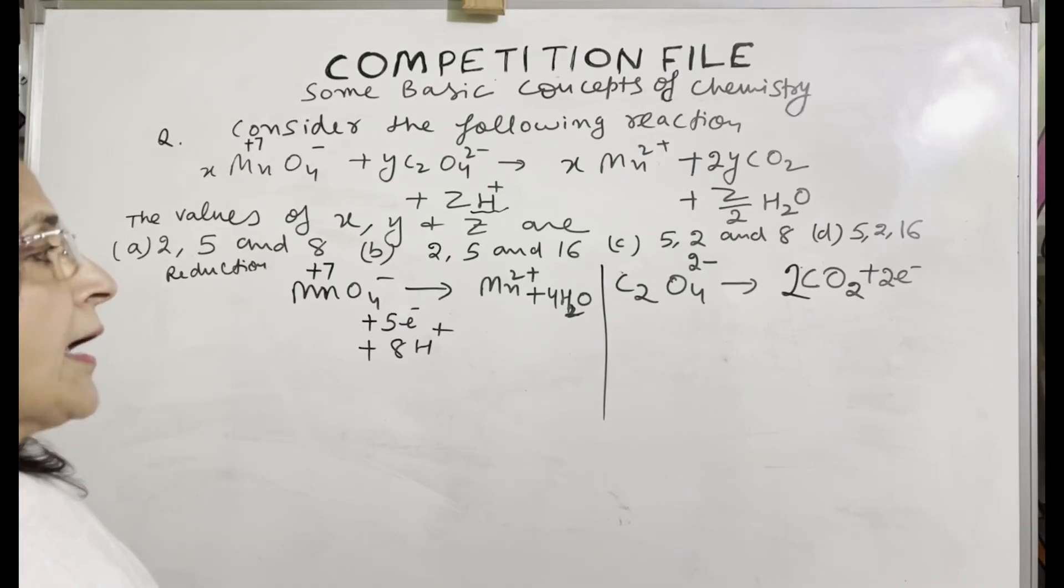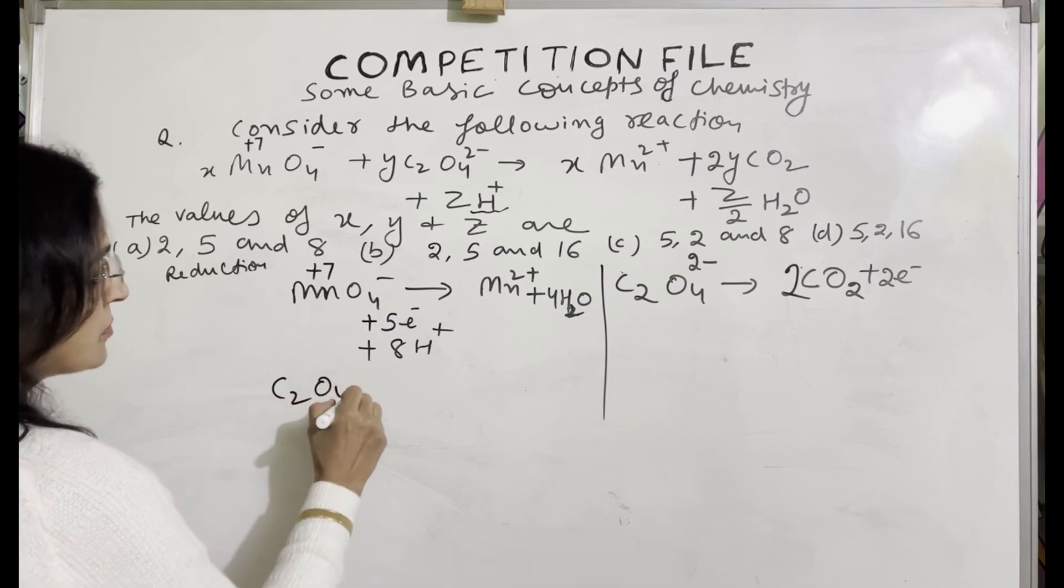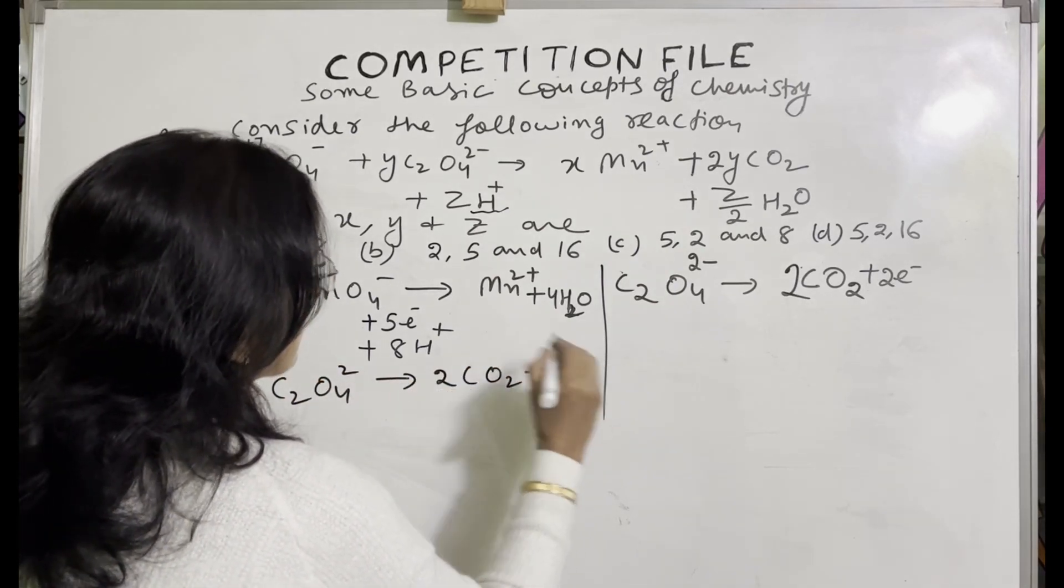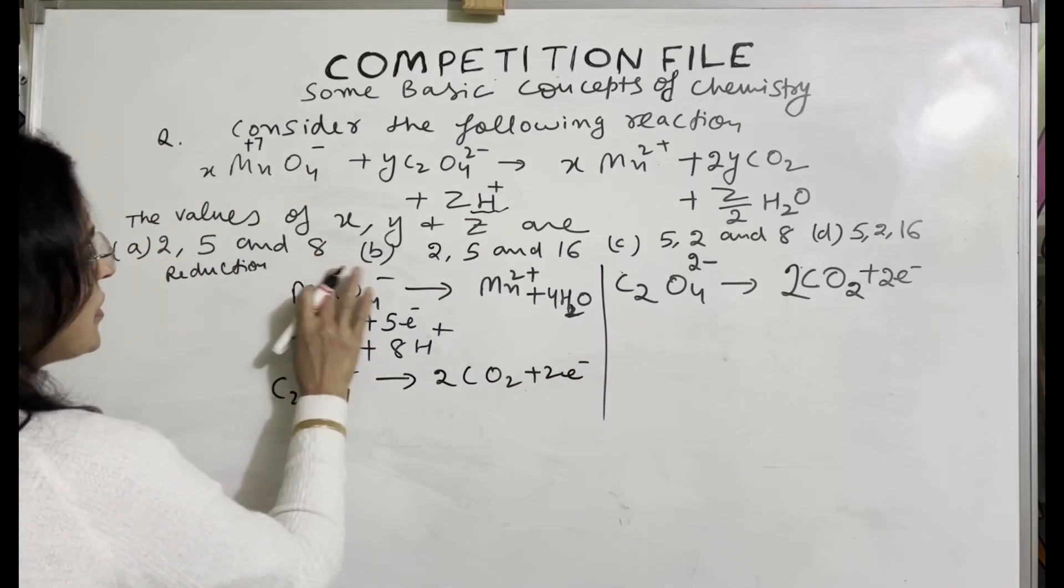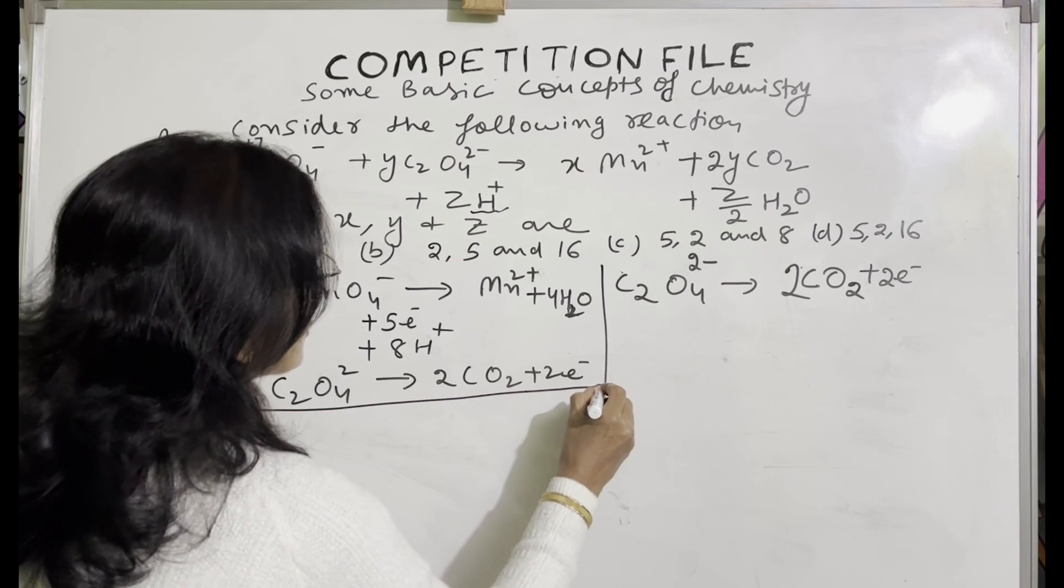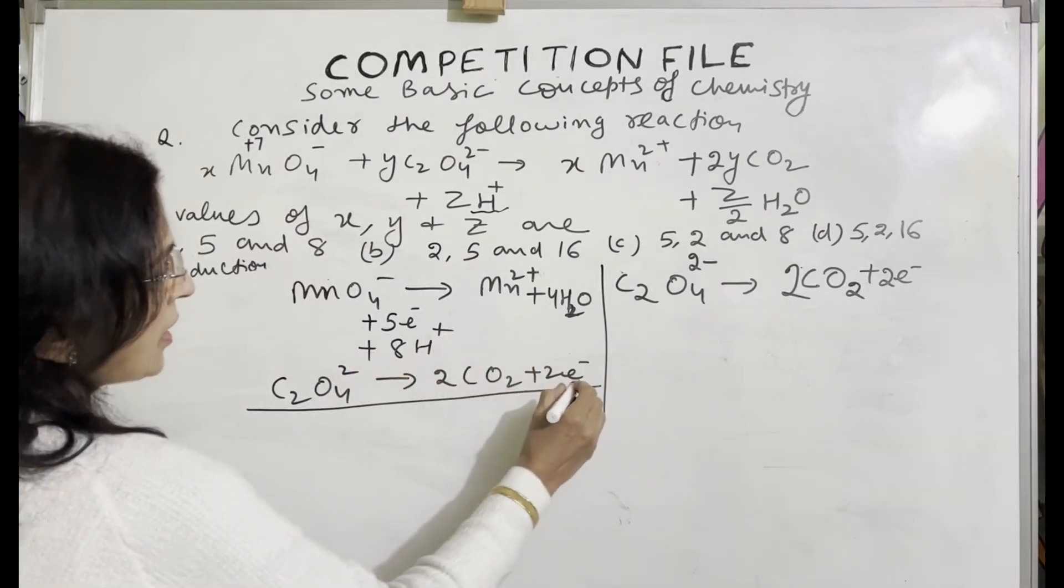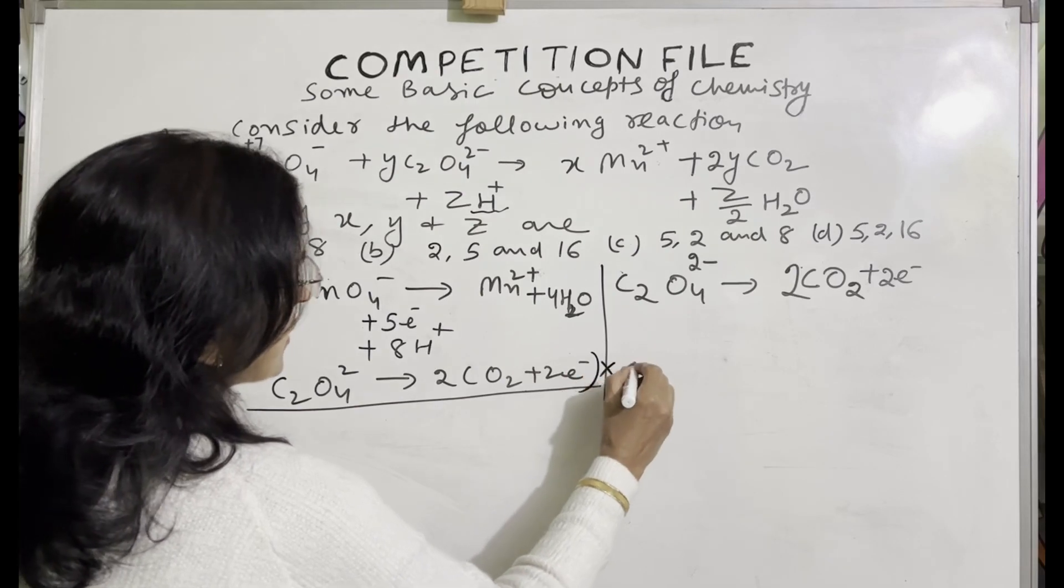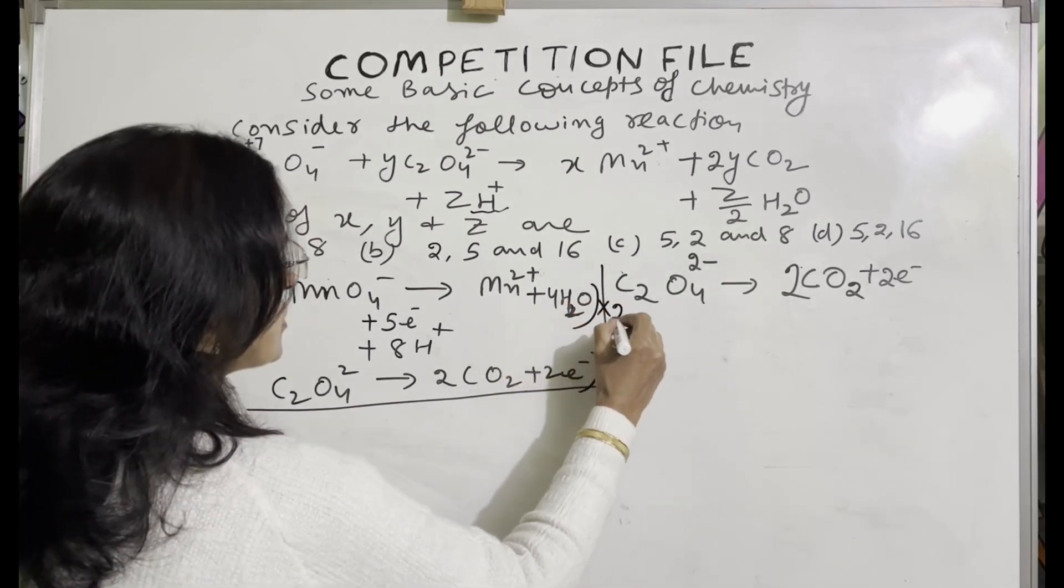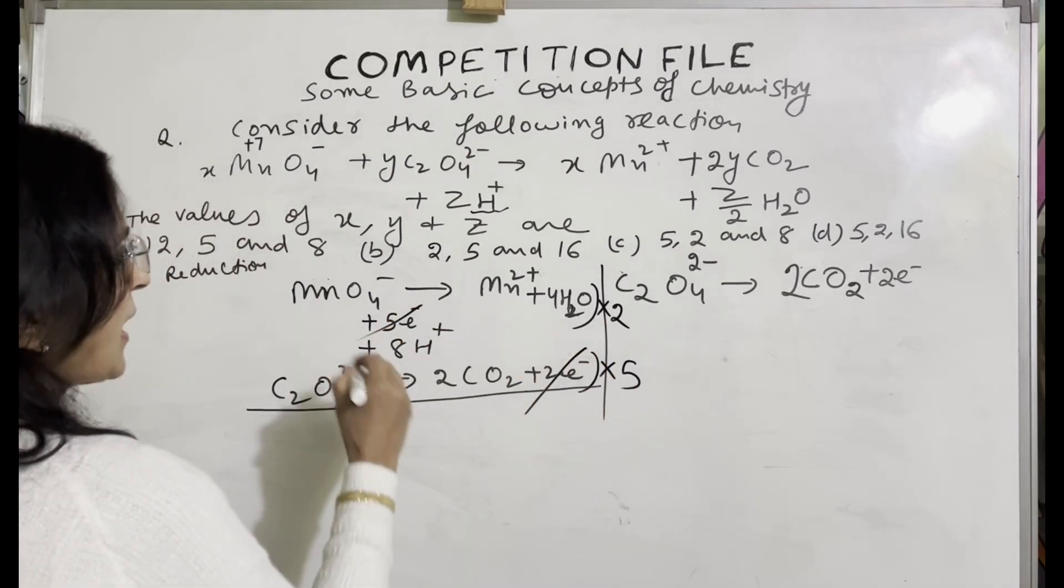Now we will add these two equations. Put this equation here. Now add these two equations. Electrons should be cancelled. So here multiply this equation by 5 and this equation multiply by 2 so electrons will cancel.